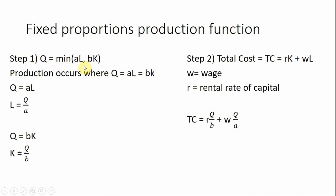Here is a fixed proportions production function where output Q is the minimum of A times units of labor or B times units of capital. Fixed proportions production function means that output will occur at the vertex or kink of the isoquant. This means that Q will equal A times L, which will equal B times K.